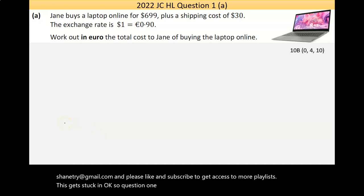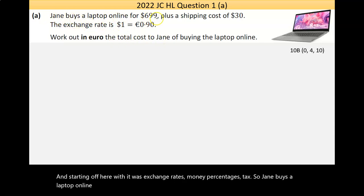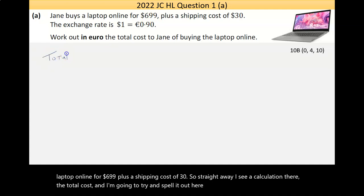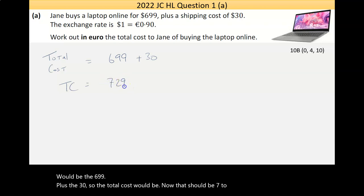Question one here is a kind of tax question. Starting off with exchange rates, money, percentages, tax. Jane buys a laptop online for $699 plus a shipping cost of $30. Straight away, I see a calculation there like the total cost. I'm going to spell it out here. The total cost would be the $699 plus the $30, so the total cost would be $729.